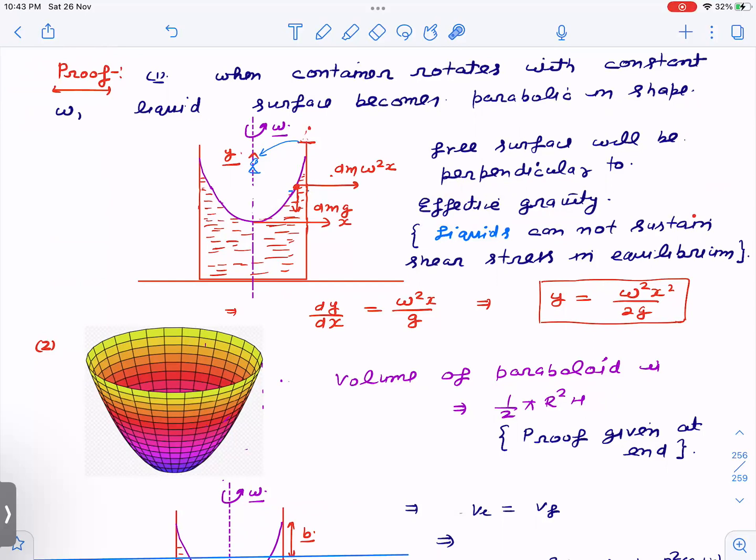So always free surface will be perpendicular to the effective gravity or net force. Or in other words, you can say the same thing is that if this is the free surface, then along the surface in equilibrium, net force has to be zero. If liquid is at rest with respect to container or with respect to this observer, then along the surface, net force has to be zero. So if I take a DM mass, centrifugal force is DM omega square X. Then if you equate the forces along the surface, then tan theta will come out to be omega squared X by G. Tan theta is dy by dx. If you integrate this, you get Y is equal to omega square X square by 2G. So that's the profile equation.